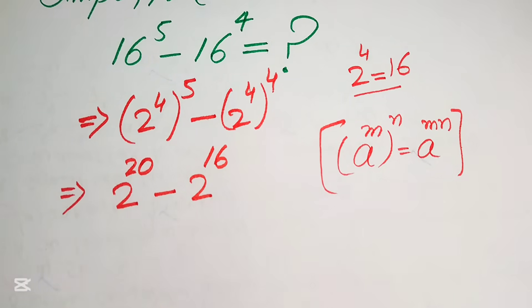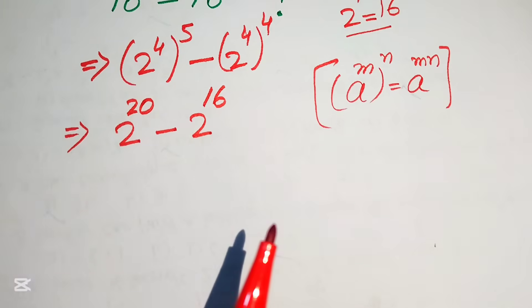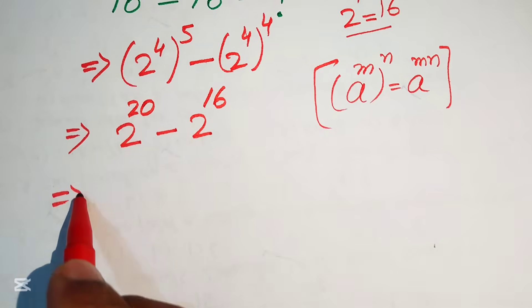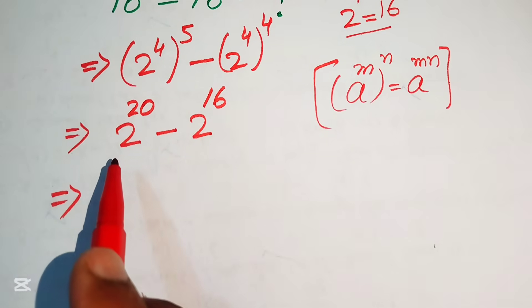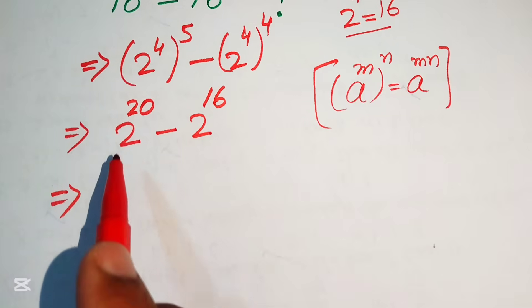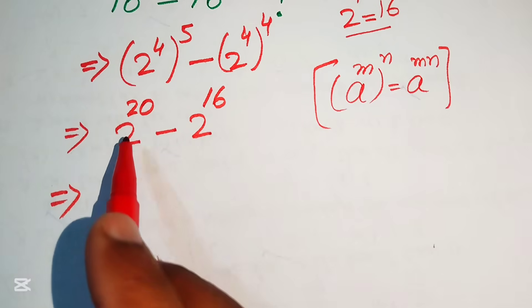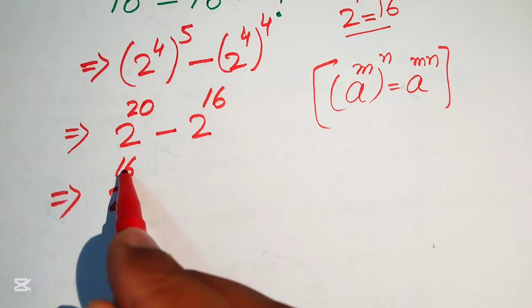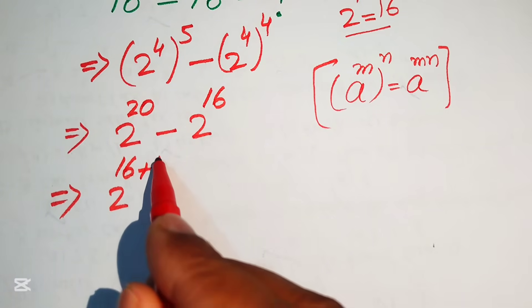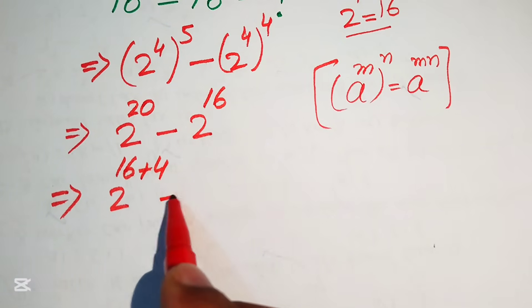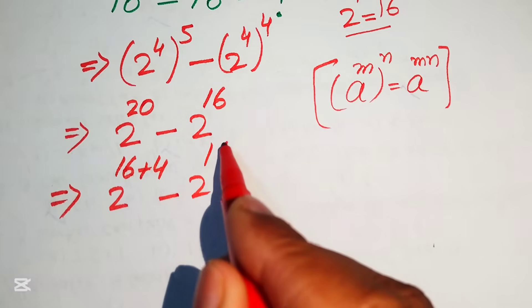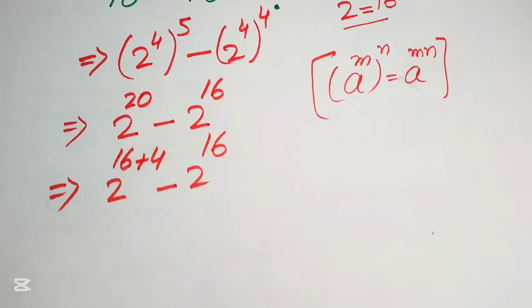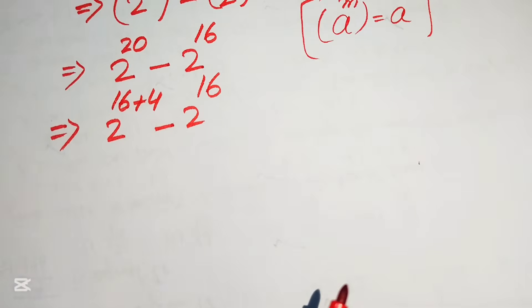We further focus on the exponent of the first term. We have 2 to the power of 20, and we write 20 as 16 plus 4, giving us 2 to the power of 16 plus 4, minus 2 to the power of 16.